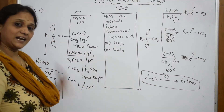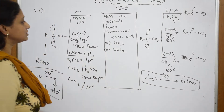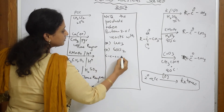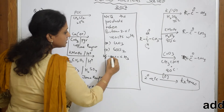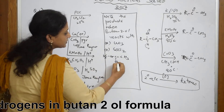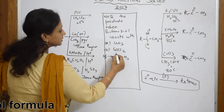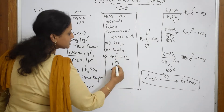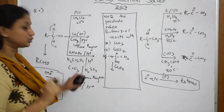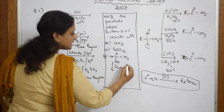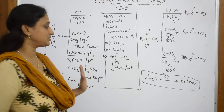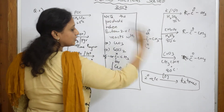Now let us solve the question. They've given us butan-2-ol. Write the structure: 1-2-3-4 carbon chain with the OH group at the second position. Now they say it reacts in the presence of CrO3. CrO3 is Jones reagent — an oxidizing agent. In the presence of H+, it is understood that you are going to carry out an oxidation reaction. We studied that secondary alcohols always give ketones.